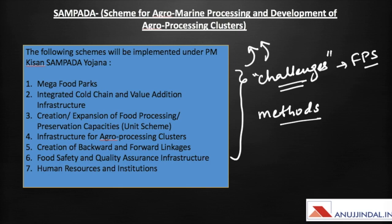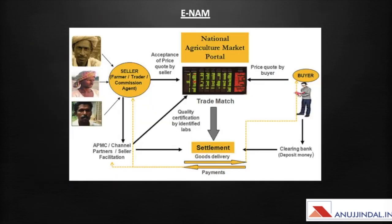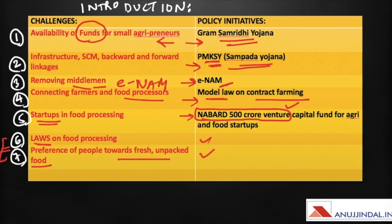You can be very simple in your explanation. You can just write that this is an umbrella scheme which integrates schemes like mega food parks, cold chain value addition, food processing preservation capacities, and agro processing clusters, and by integrating these previously existing schemes, Sampada is trying to overcome a lot of challenges in the food processing sector. The third one is eNAM, which is going to target the removal of middlemen.